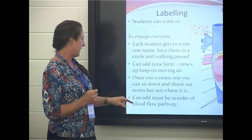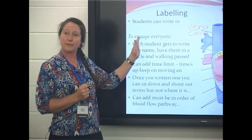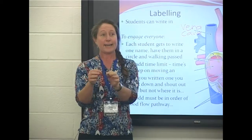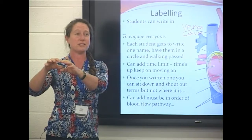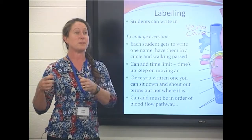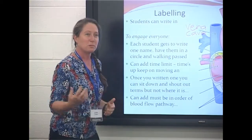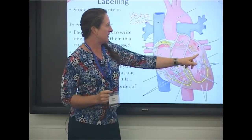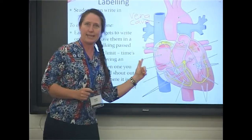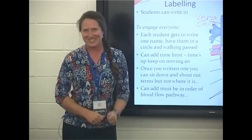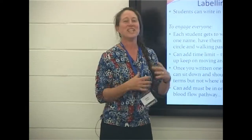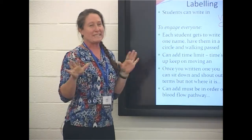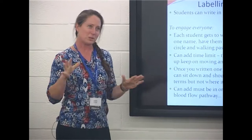Another way is to say they have to label the parts in order of blood flow. You could even have a panel of judges — three or four class members with the answers in front of them. The person comes up and writes a label, but if the blood actually goes somewhere else, the judges go 'no, you're out' — back to the start of the line, or whatever, to make it fun. It really does depend on your students, so you just have to see what works with your group.